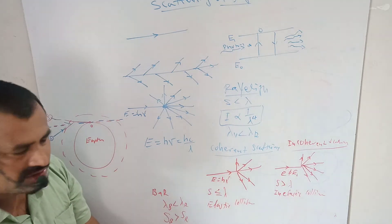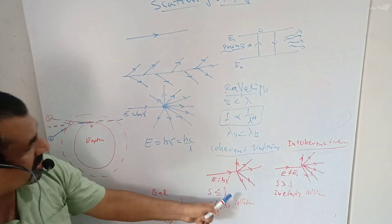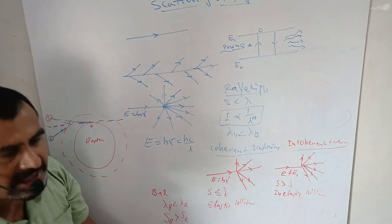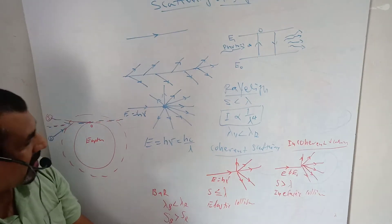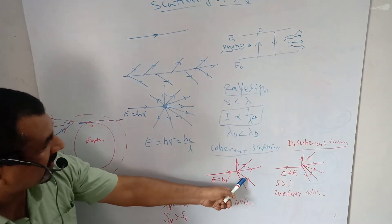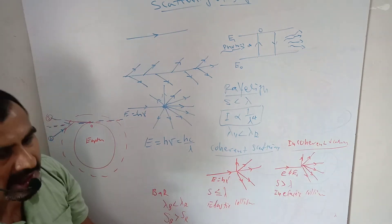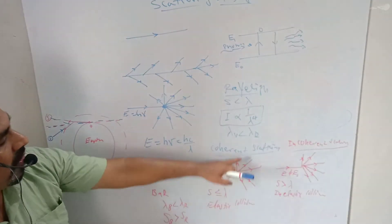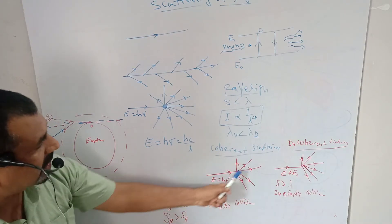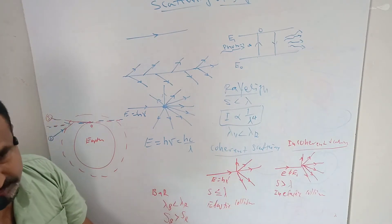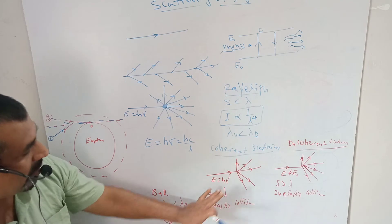Scattering of light in which the energy of the scattered light is the same as that of the energy of the incident light is called coherent scattering. Coherent scattering takes place when the size of the particle is less than or equal to the wavelength of the light.